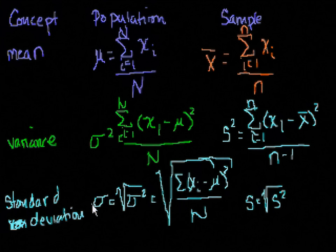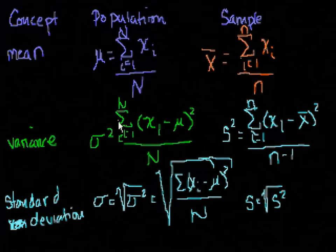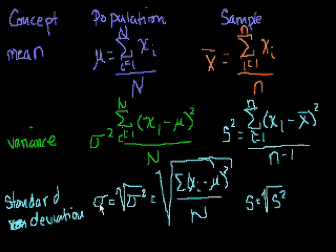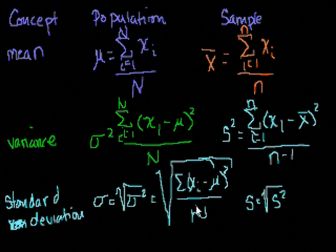Why use standard deviation? First, the units work out better. If data points are measured in meters, the variance would be in meters squared — a strange concept. Taking the square root gives you units back in meters. Also, if your data follows a bell curve distribution, the standard deviation tells you interesting things about the probability of finding a value within one or two standard deviations of the mean.